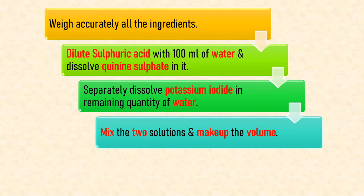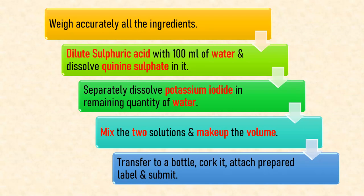To summarize the procedure: take dilute sulfuric acid with 100 ml of water and dissolve quinine sulfate in it as the first solution; the second solution is potassium iodide in the remaining quantity of water. Mix these two solutions, make up the volume, then transfer to a bottle, cork it, attach a prepared label, and submit.